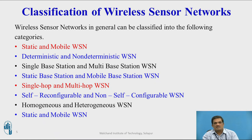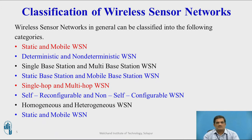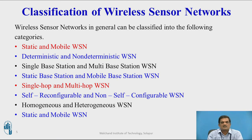In single base station wireless sensor networks, only one coordinator acts as a base station, sending signals to and receiving information from other sensors. In multi-base station networks, multiple coordinators or base stations each connect a group of sensors. Base stations can also be static or mobile in nature. In single-hop wireless sensor networks, only one intermediate hop exists between the sending and receiving sensors. In multi-hop sensor networks, multiple intermediate nodes or sensors are placed between sender and receivers.